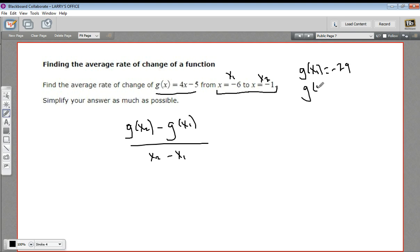g of x2, well x2 is negative 1. Negative 1 times 4 is negative 4, minus 5 is negative 9.